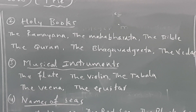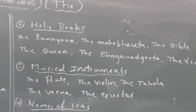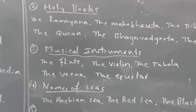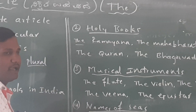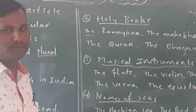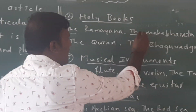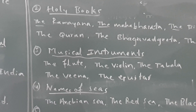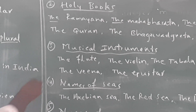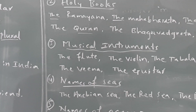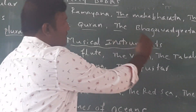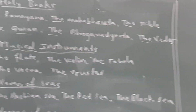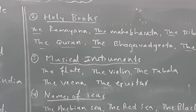Second rule: before the names of holy books or famous books, we use the article. For example: the Ramayana, the Mahabharata, the Bible, the Quran, the Bhagavad Gita, the Vedas. These are famous books or holy books, so before them we use the article 'the'.